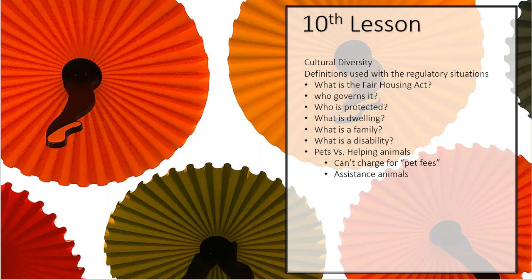The Civil Rights Act of 1866 prohibited discrimination based on race — that was the sole basis. Then we had Plessy versus Ferguson, which became the 'separate but equal' law. They determined it was not considered discrimination if you provided separate facilities to different people as long as they were of equal stature. This came about due to a gentleman on a railroad car who was asked to move to the back car and filed a complaint.